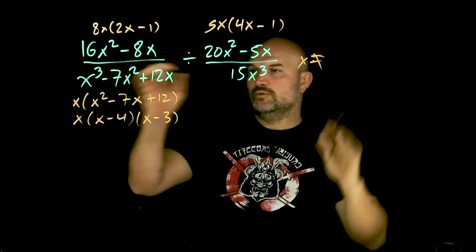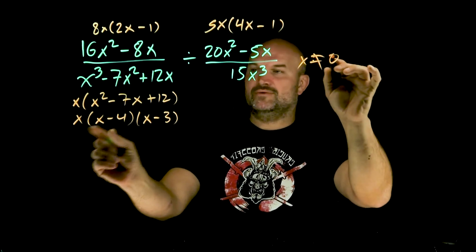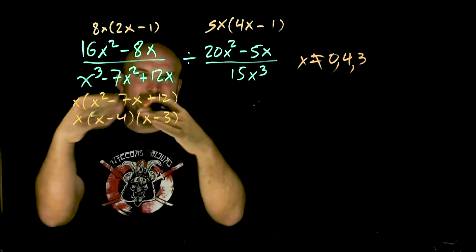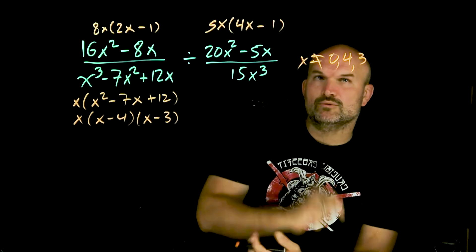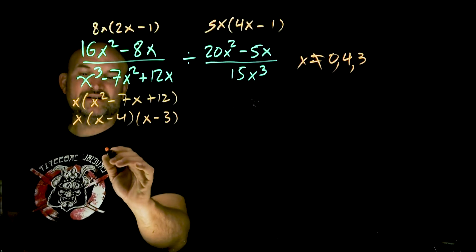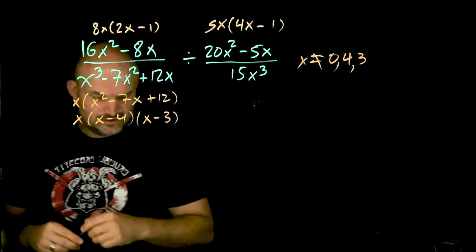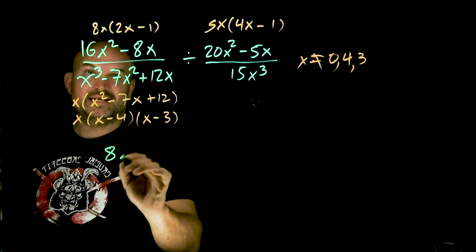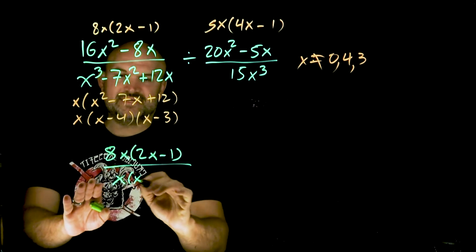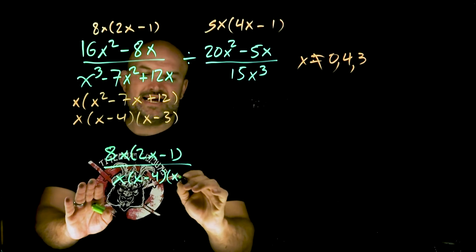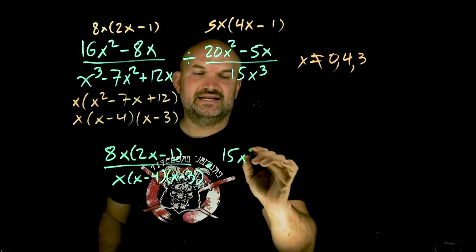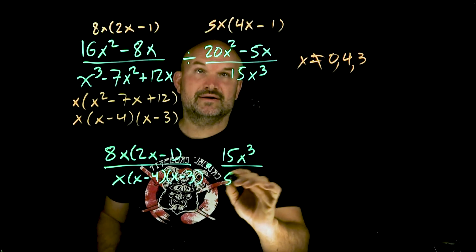Identifying excluded values from the original expression: x cannot equal 0, 4, or positive 3 — plugging those in makes the denominator equal to 0. The other denominator also gives x cannot equal 0. Now rewriting in factored form: the numerator is 8x times (2x minus 1) over x times (x minus 4) times (x minus 3), divided by 15x cubed over 5x times (4x minus 1). Dividing a fraction is the same as multiplying by the reciprocal.